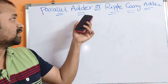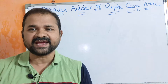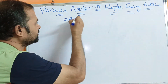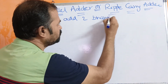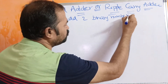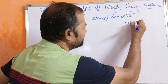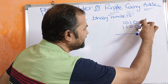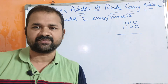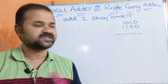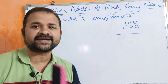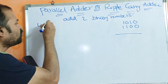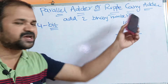Let us discuss the parallel adder or ripple carry adder. A parallel adder is mainly useful in order to add two binary numbers. For example, let the first binary number be 1010 and the second binary number be 1100. In order to perform addition on these two binary numbers, we can use the parallel adder. Since each number contains 4 bits, we call this a 4-bit parallel adder.